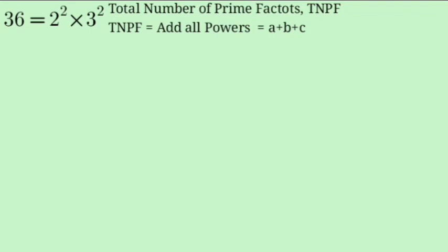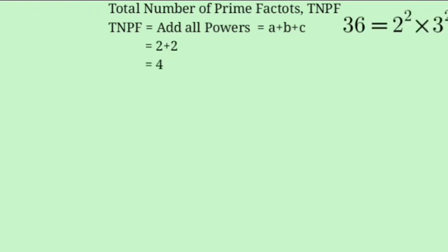Total number of prime factors is calculated by adding all the powers. We have powers 2 and 2, so 2 plus 2 equals 4. Total number of prime factors is 4.